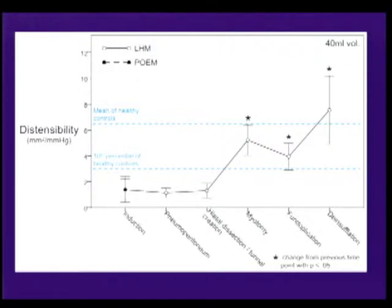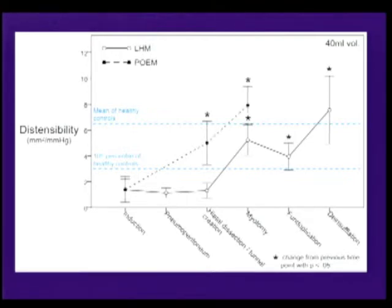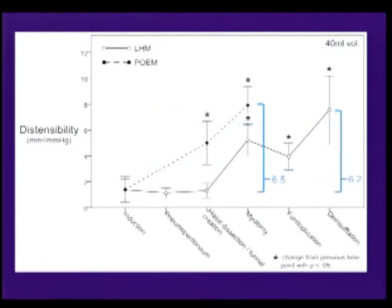POEM patients started at a similarly pathologically low distensibility. Creation of the submucosal tunnel — before any myotomy was performed — resulted in an increase in distensibility into the range of healthy controls. Performing the myotomy during POEM resulted in a second stepwise distensibility increase, although this was lower than the increase caused by the submucosal tunnel. When overall changes in distensibility were compared, they were similar between Heller and POEM.